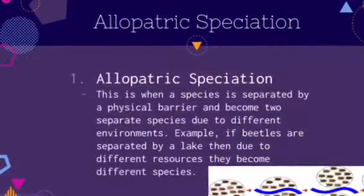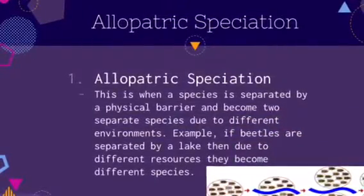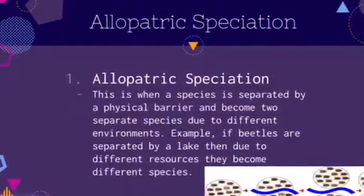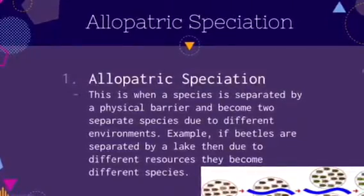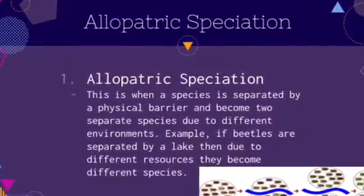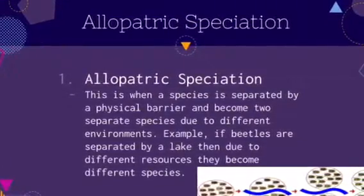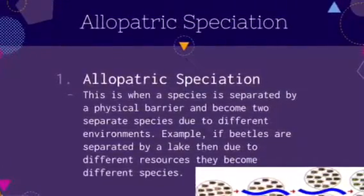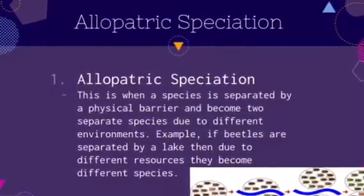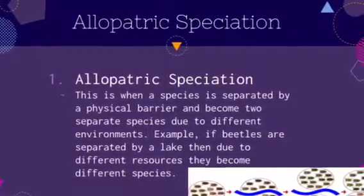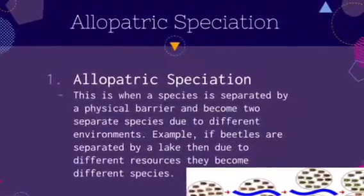Allopatric speciation is when a species is separated by a physical barrier and becomes two separate species due to different environments. For example, if beetles are separated by a lake, then due to different resources they become different species.